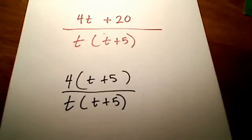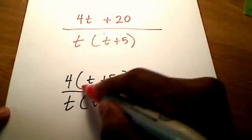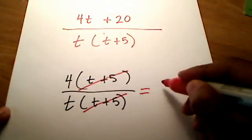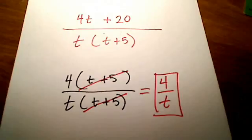And to simplify, hey, look at those two parentheses. They're exactly the same. We can cross these guys out. And our final answer is 4 over t. Isn't that pretty cool? All three of those big fractions shrunk down to just 4 over t. Hope that helps.